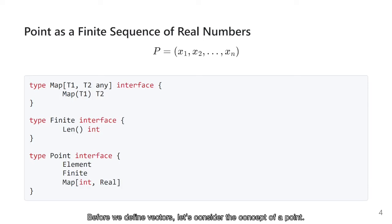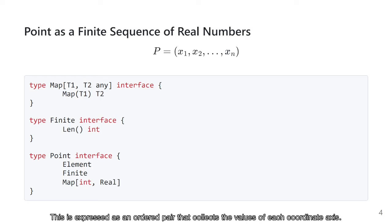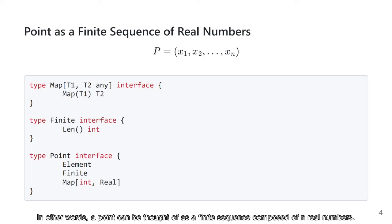Before we define vectors, let's consider the concept of a point. We typically understand a point as a coordinate point in the Cartesian coordinate system. This is expressed as an ordered pair that collects the value of each coordinate axis. If we want to represent a point in n-dimensions, we need n real numbers. In other words, a point can be thought of as a finite sequence composed of n real numbers.